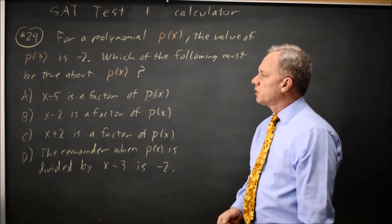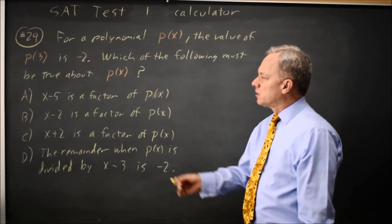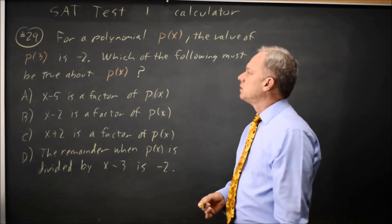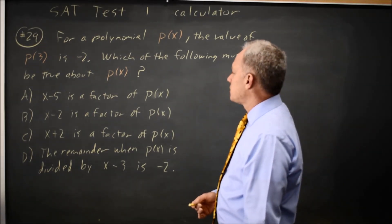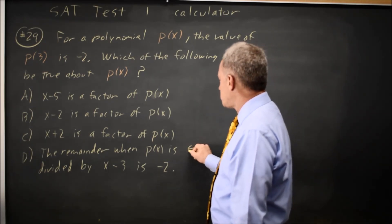Well, if P(3) were 0, then x minus 3 would be a factor. There is nothing that tells you factors when your value is not 0 directly. We do have something called the remainder theorem, which is choice D.